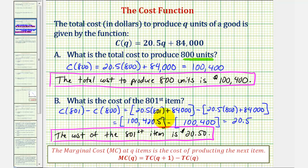There's a couple things I want to mention about this. Notice how the cost function is linear, where 20.5 would be the slope of the linear equation. So as Q increases by one, the cost increases by 20.5, or $20.50.